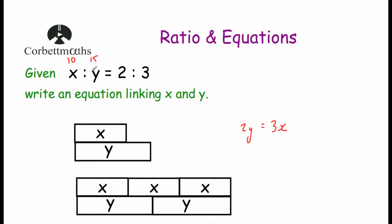Using the shortcut: multiply y by the x number in the ratio — 2 times y is 2y — and multiply x by the y value in the ratio — 3 times x is 3x. So 2y equals 3x. If you want to make y the subject, divide both sides by 2. If you want to make x the subject, divide both sides by 3.